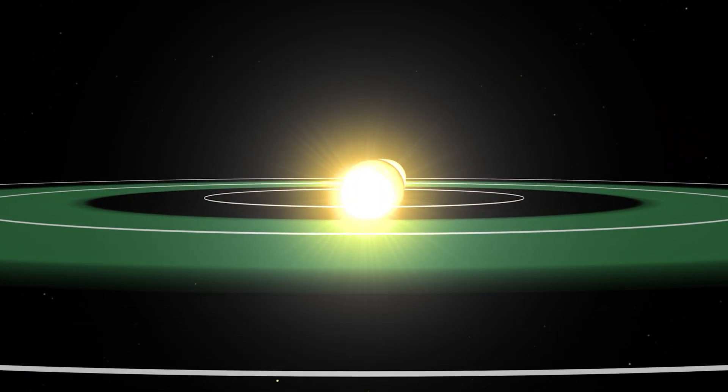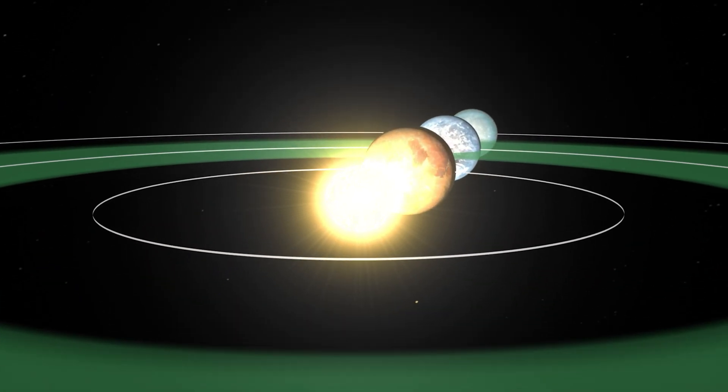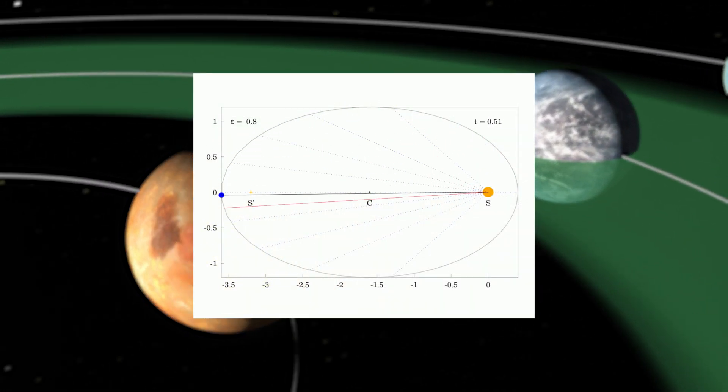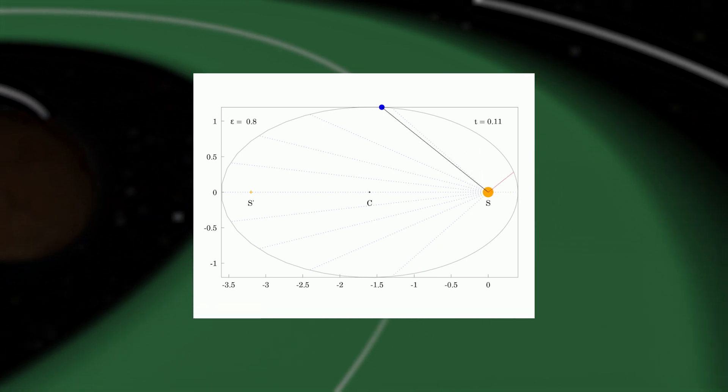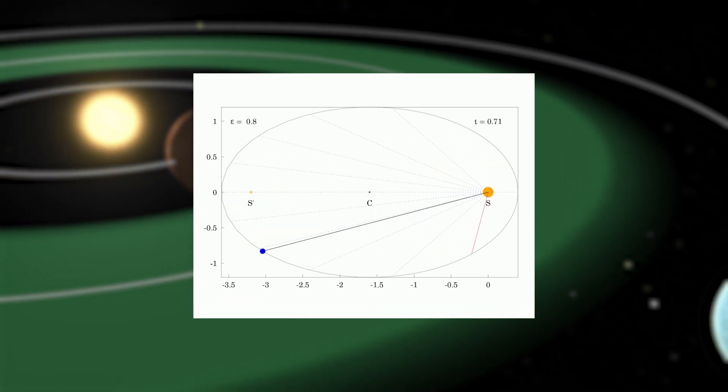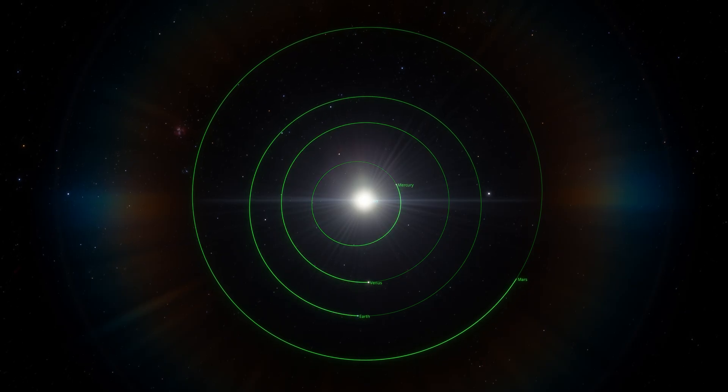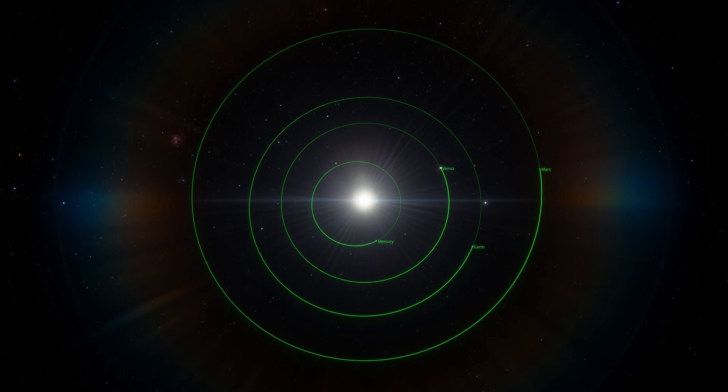Thus, in 1609, Kepler published his New Astronomy, in which he formulated his first two laws, and ten years later, another, the third, where he demonstrated the relationship between a planet's distance from the Sun and the time it takes to complete its orbit.